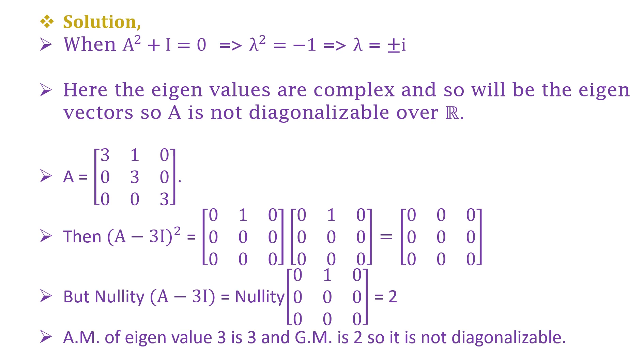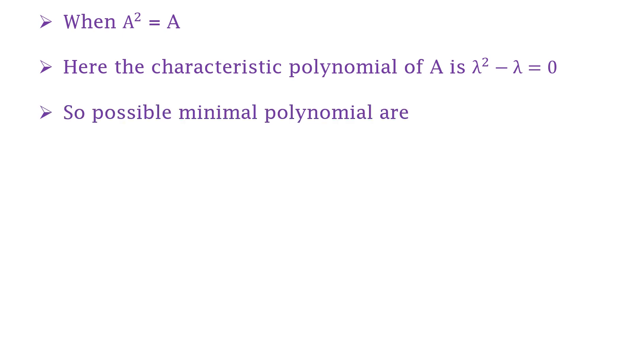Now we go to option C, when A² = A. Here the characteristic polynomial of A is λ² - λ = 0.